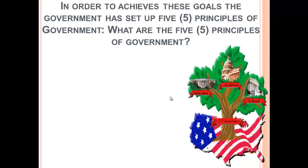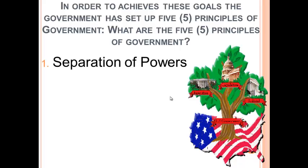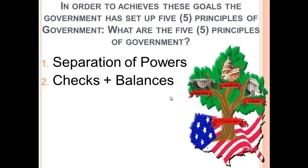Let's go back to the last video when we talked about the six goals of the U.S. government. There are five different principles of the government to meet those six goals. The first one is separation of powers — the idea of dividing up government power not only among different branches of government, but between the federal and state governments as well. Also, we see the idea of checks and balances, where different forms of government can actually check and balance the power throughout the entire system.